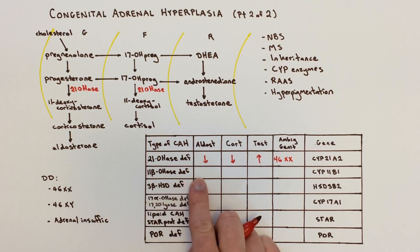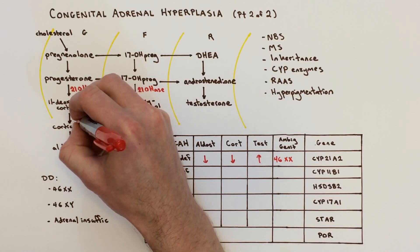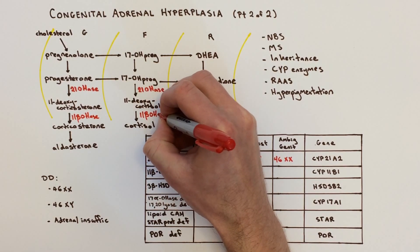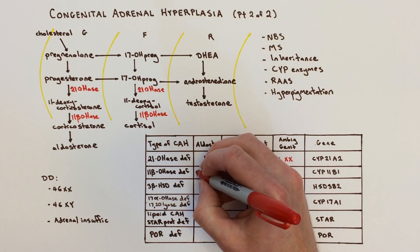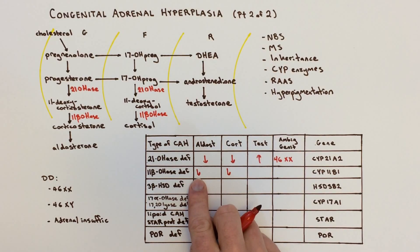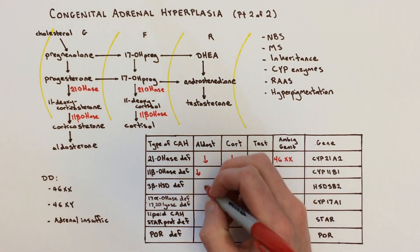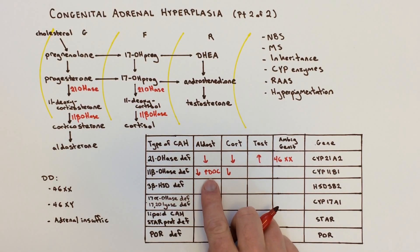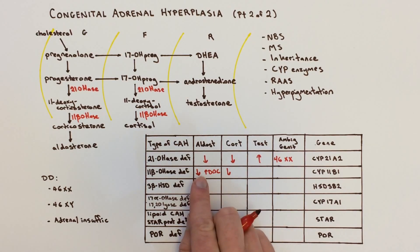Next is 11-beta-hydroxylase deficiency, which is pretty similar to 21-hydroxylase deficiency, which is why I put it next. The enzyme acts at two places in the pathway — 11-beta-hydroxylase here and here. Again, we don't get aldosterone and we don't get cortisol, so each of those is low. However, there's a key difference with aldosterone: we have a lot of 11-deoxycorticosterone, or DOC. Since DOC is also a mineralocorticoid, rather than having hypotension and salt wasting, in 11-beta-hydroxylase deficiency we actually get hypertension from too much DOC — you retain salt and get hypertension.